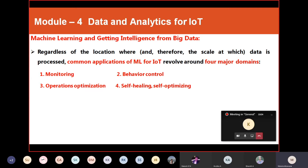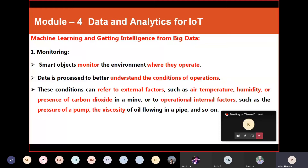You may have seen movies about robots that heal and optimize themselves automatically — that is self-healing and self-optimizing. A practical example is Google Maps navigation, where the route automatically optimizes as you change directions. Now we'll look at each domain one by one: monitoring, behavioral control, operations optimization, and self-healing and self-optimizing.